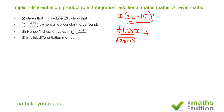Then we differentiate x, which gives 1, times the square root of 2x plus 15 — that is 2x plus 15 to the power of one half — for the second product term.